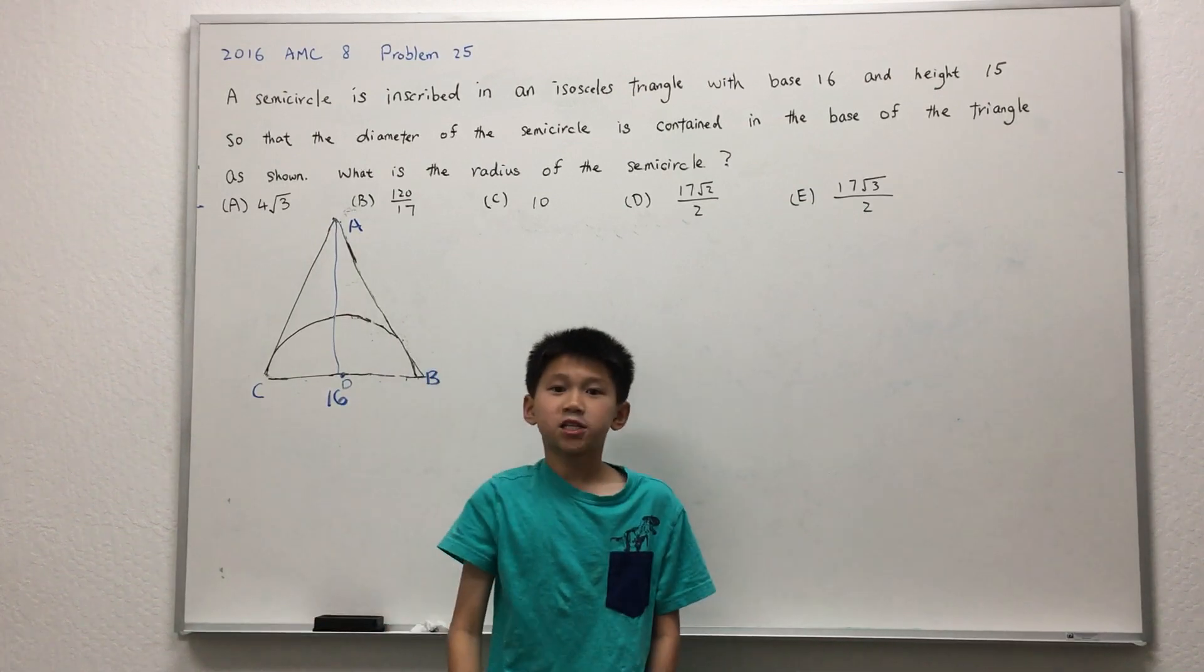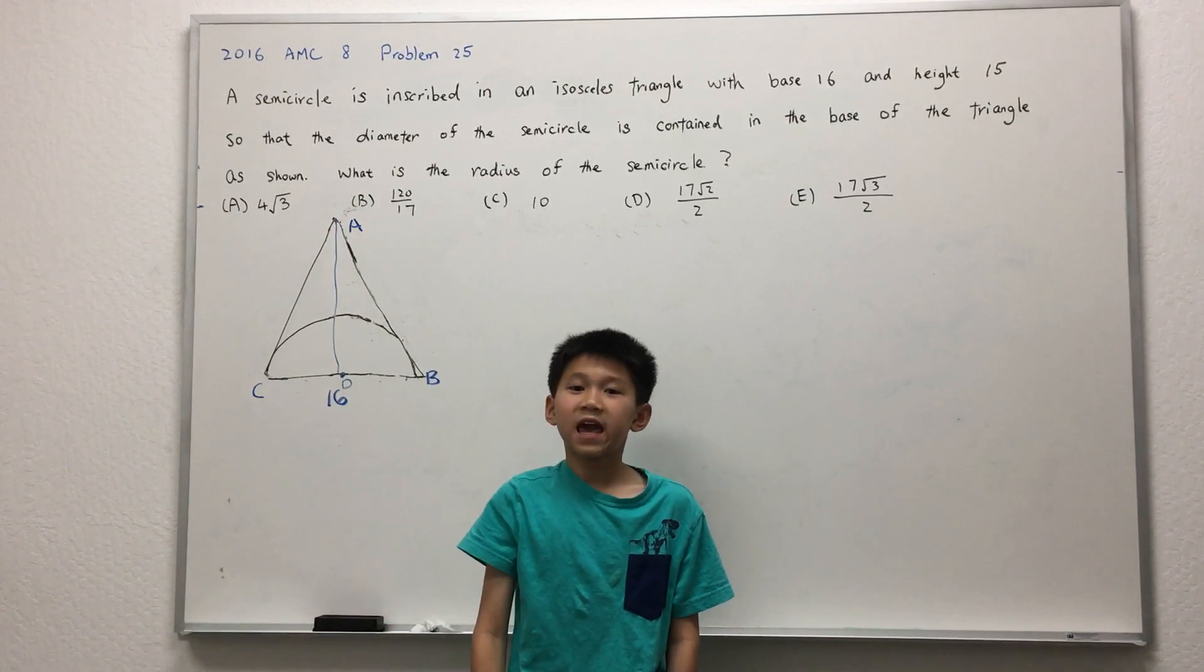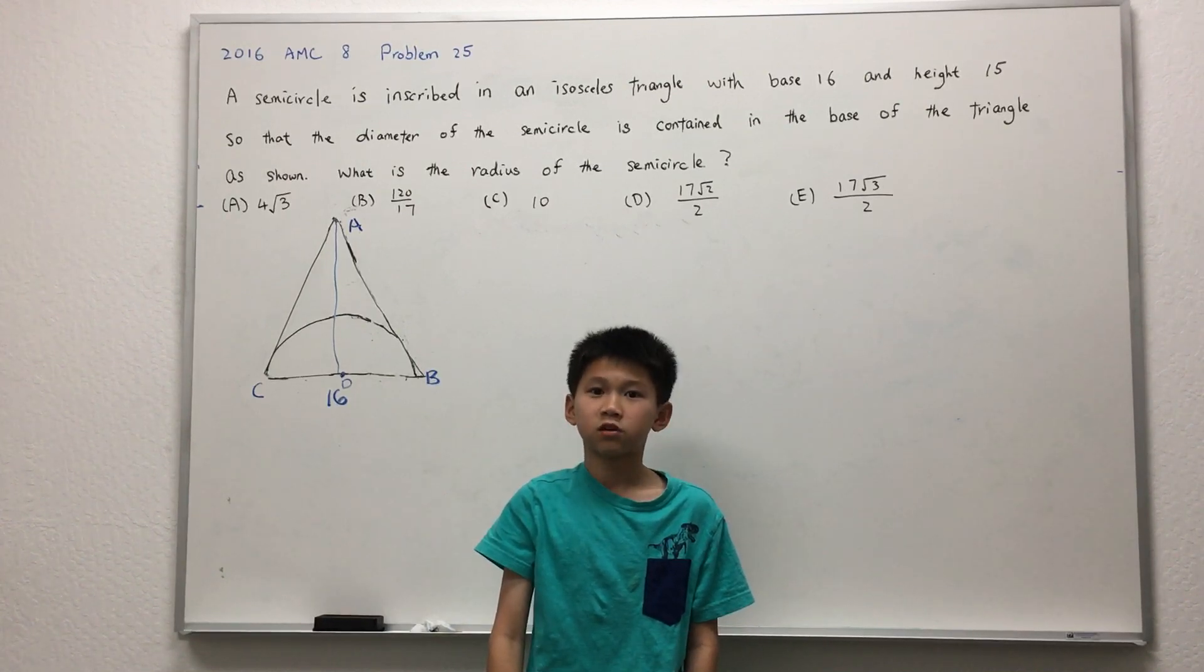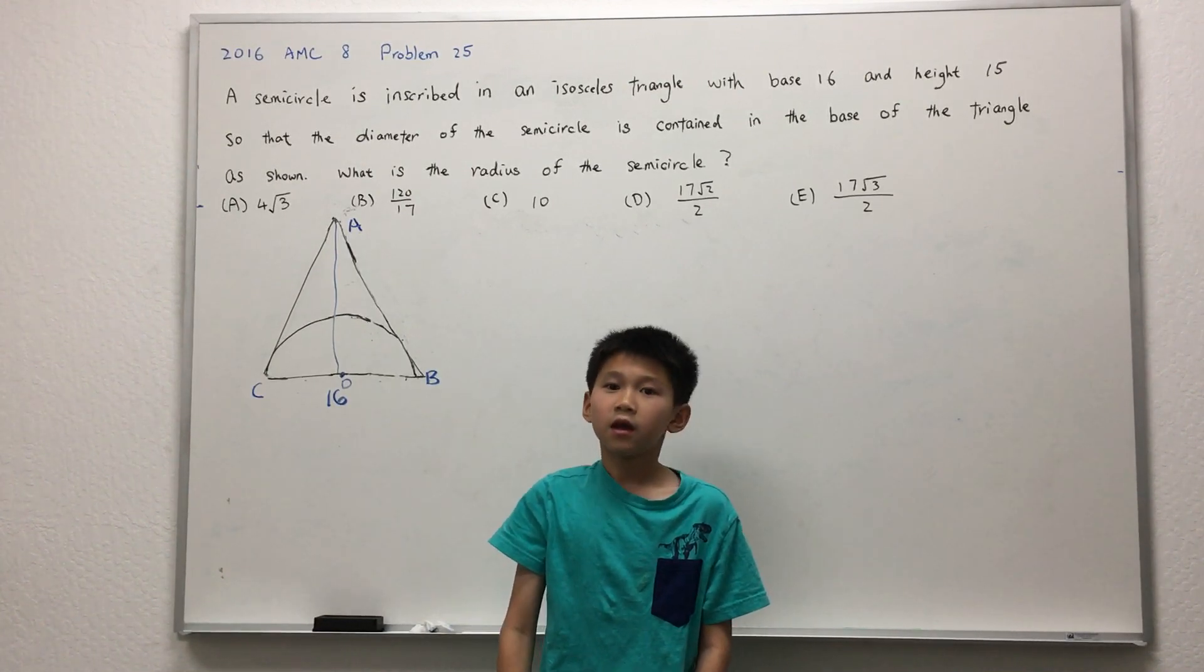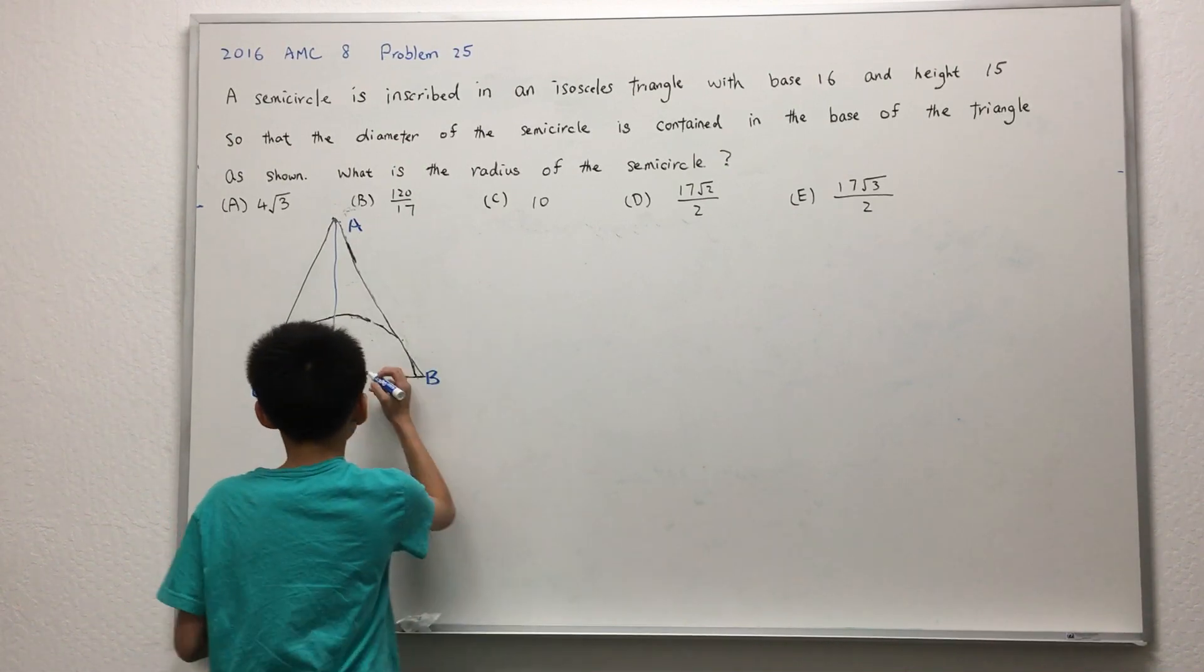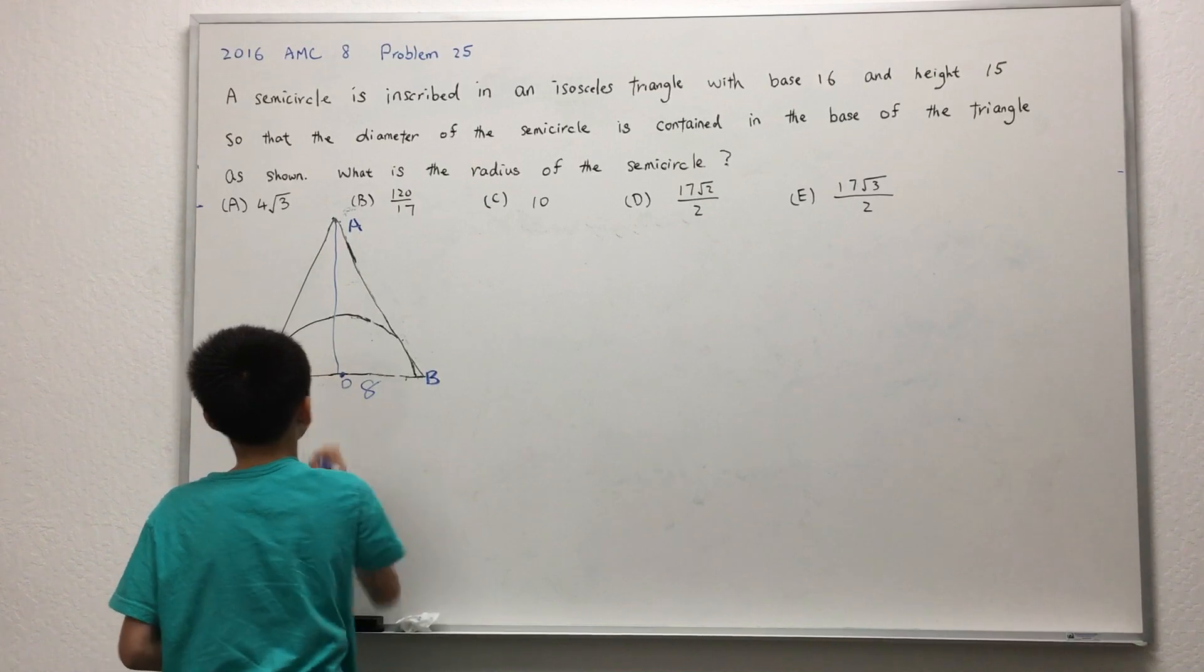Since triangle ABC is isosceles, this means that AD is the perpendicular bisector to CB, which means that it cuts CB in half. So, DB is 8 and CD is 8.